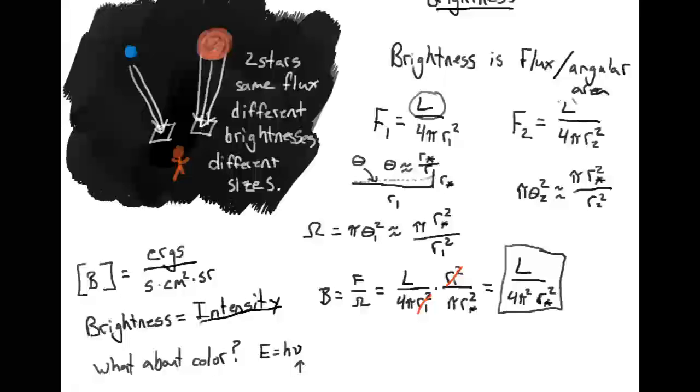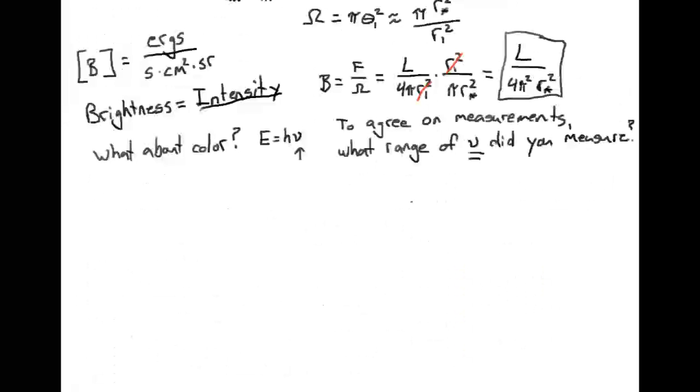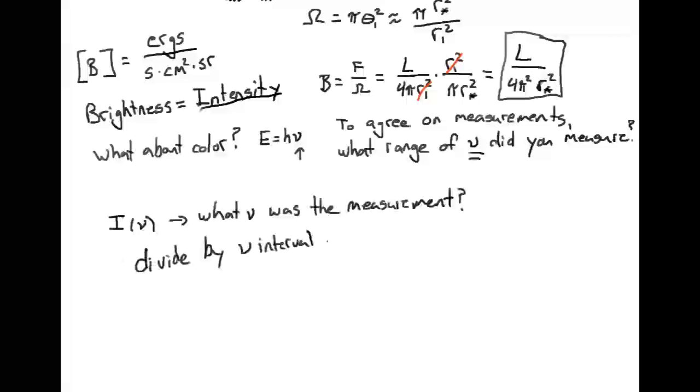So when we are talking about the luminosity of a star, over what range are we measuring this luminosity? Is it all colors? Is it only optical? Is it only infrared? Are we measuring the radio flux? Do we include ultraviolet? To agree on the measurements, you need to know what range of frequencies did you measure. So first of all, to really agree on our measurements, we have to know what frequency we were centered at. So if we had intensity i, we would like to document it as a function of frequency. And secondly, we would like to divide by the frequency interval that we measured over.